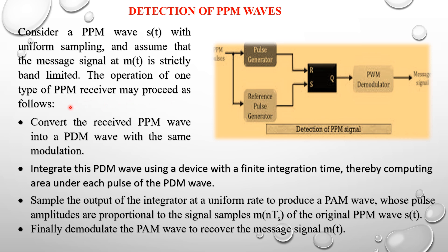The first step is to convert the received PPM wave into a Pulse Duration Modulation (PDM) or Pulse Width Modulation (PWM) wave with the same modulation. Then integrate this PWM wave using a device with a finite integration time, thereby computing the area under each pulse of the PPM wave.